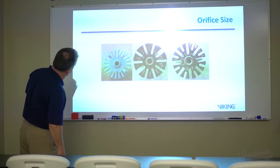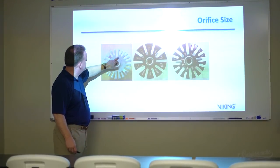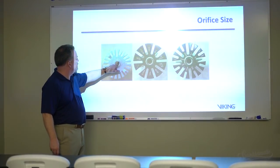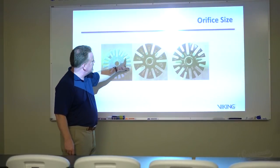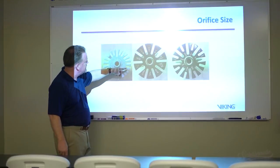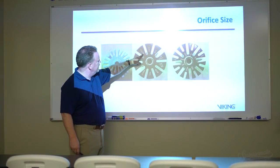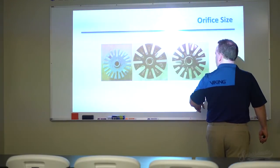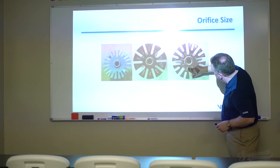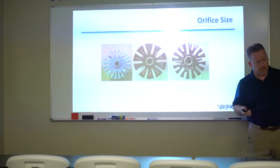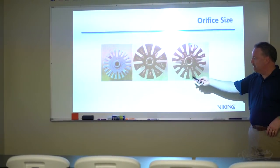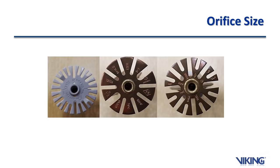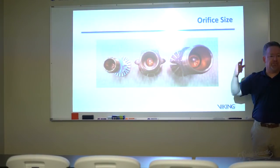Looking at the three sprinklers: the VK 472 has a K factor of 5.6 to 5.8; the middle one — an ESFR, VK 500 — has a K factor of 14; and the one on the far right has a K factor of 18.6. So we have K 5.8, K 14, and K 18.6, and they go even bigger than that.